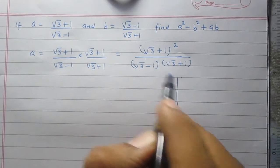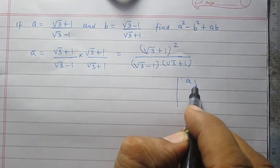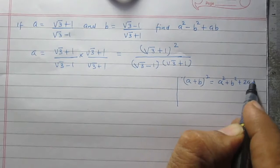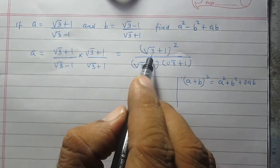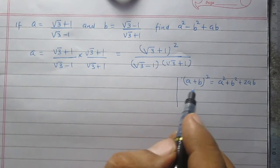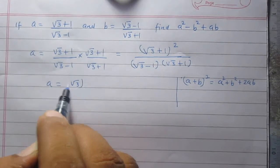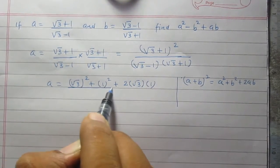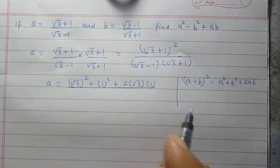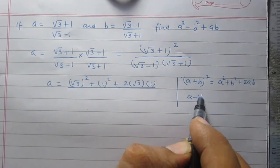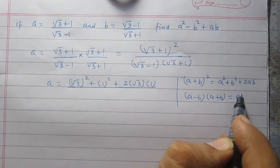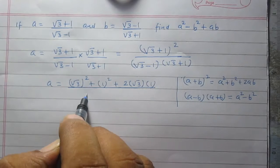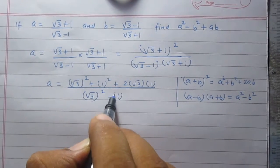The numerator of this fraction can be simplified using the identity: a plus b whole square is equal to a squared plus b squared plus twice of ab. Using this identity, where a stands for square root of 3 and b stands for 1, we can rewrite the numerator as a squared plus b squared plus twice of ab. The denominator can be simplified using the identity: a minus b multiplied by a plus b is equal to a squared minus b squared, where a stands for square root of 3 and b stands for 1, so the denominator becomes a squared minus b squared.